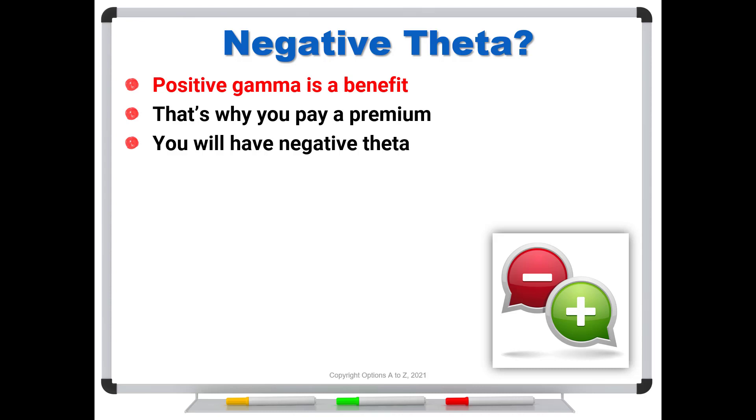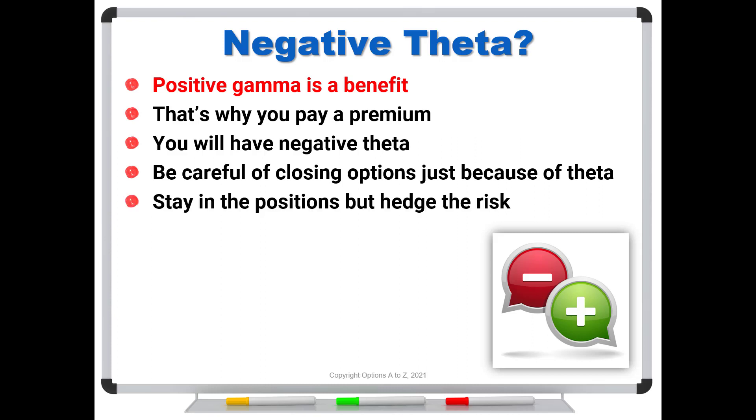So the second main point, be careful of closing option positions just because you hear of theta and this negative theta. Instead, stay in the positions, but hedge the risk. And this is why it's so much more beneficial to learn about hedging, rolling, and morphing. And that's going to allow you to use the power of the curve.